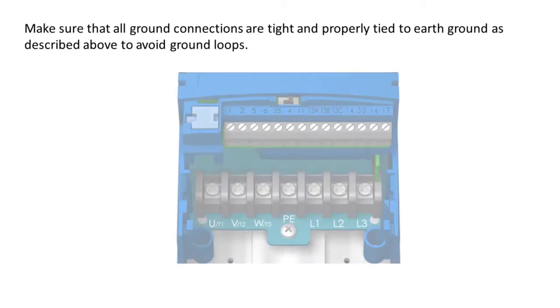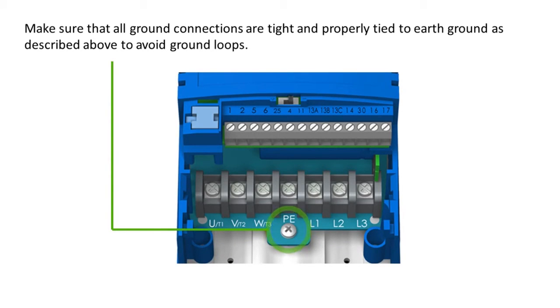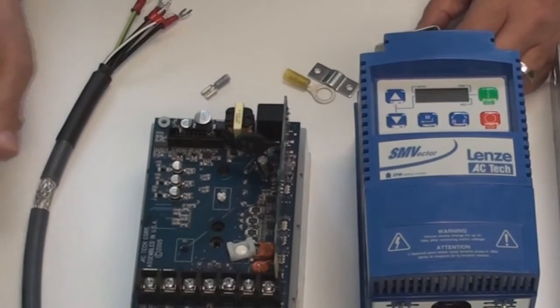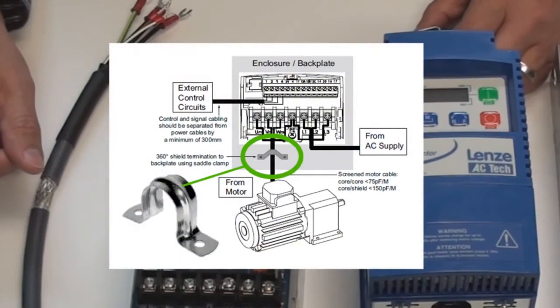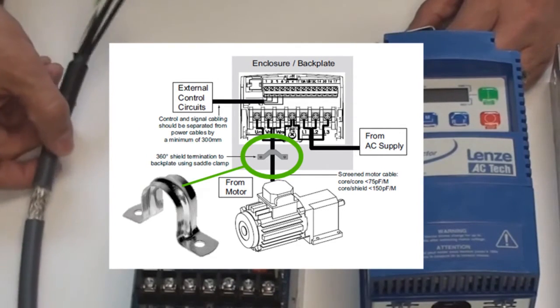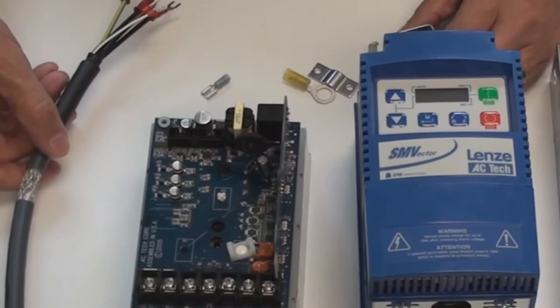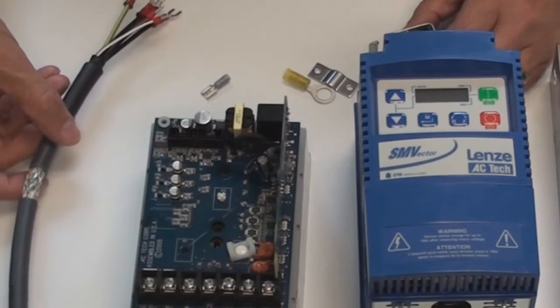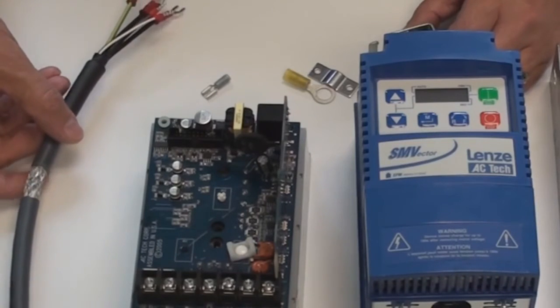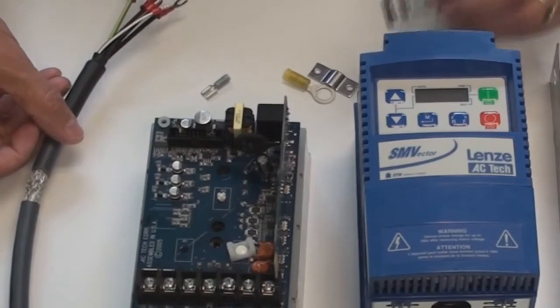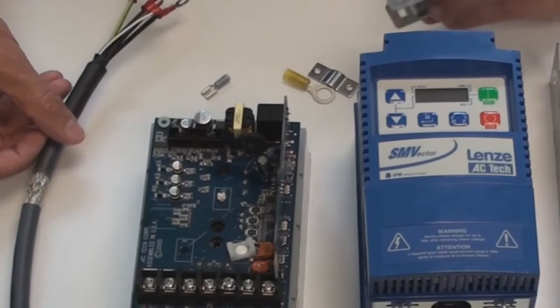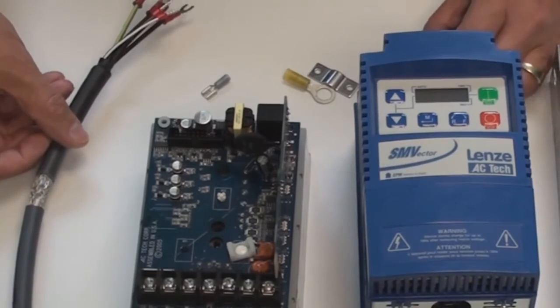Make sure that all your ground connections are tight and properly tied to earth ground to avoid ground loops. For proper grounding of a shielded cable, we recommend using what we call a saddle clamp, which is a 360 degree connection that goes around the shield of the cable itself. You can cut a small piece of the insulation in the cable all the way around and take about an inch to two inches out.